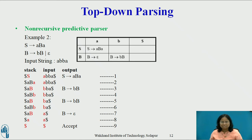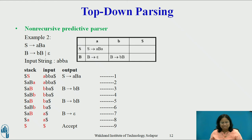Now the stack contains AB and the input buffer contains A. The input pointer points to input symbol A and the top of the stack is B. Output the production B → ε as shown in step 7, and replace B by ε on the stack as shown in step 8. Now the top terminal symbol A matches with input symbol A, so pop A from the stack and delete input symbol A from the input buffer as shown in step 9. The parser traces out a leftmost derivation for the input. Finally, the stack as well as the input contains $, so the parser halts and announces the successful completion of parsing.